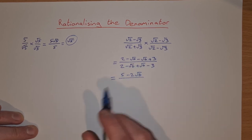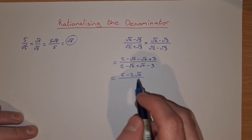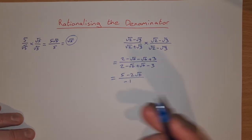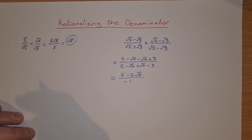And then on the bottom we have 2 and minus 3, so 2 minus 3 is minus 1. And minus root 6 plus root 6 is 0, so they cancel out.